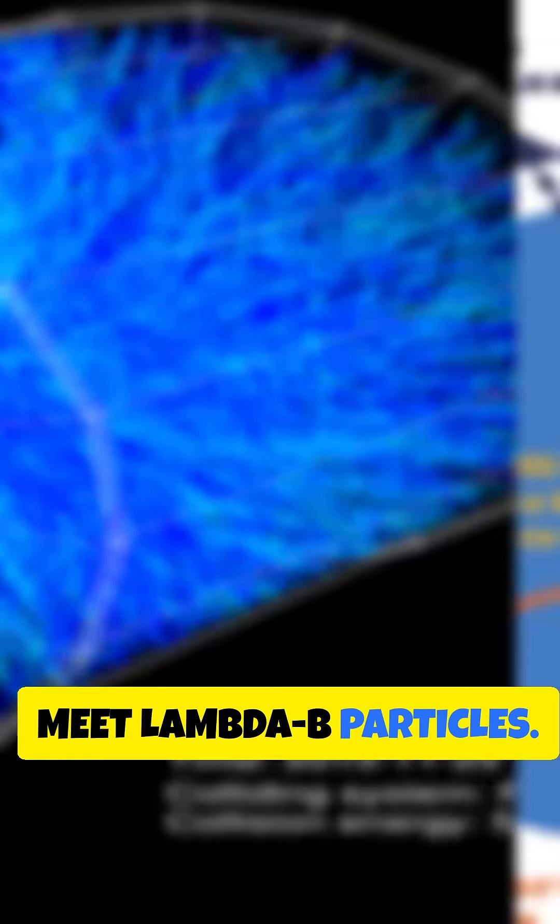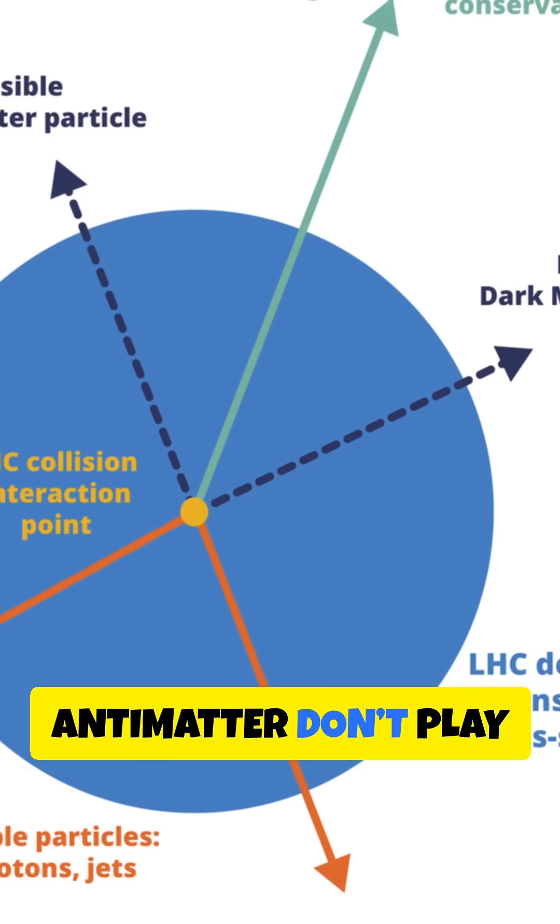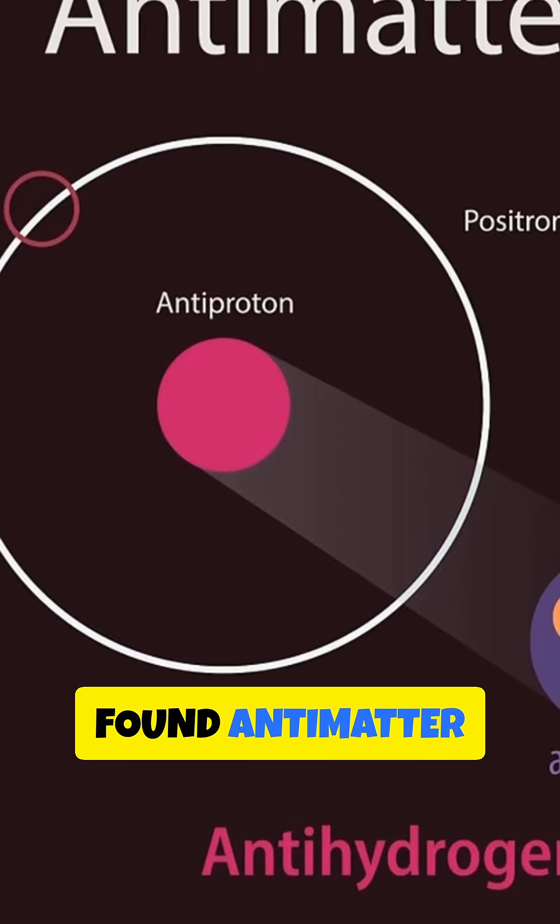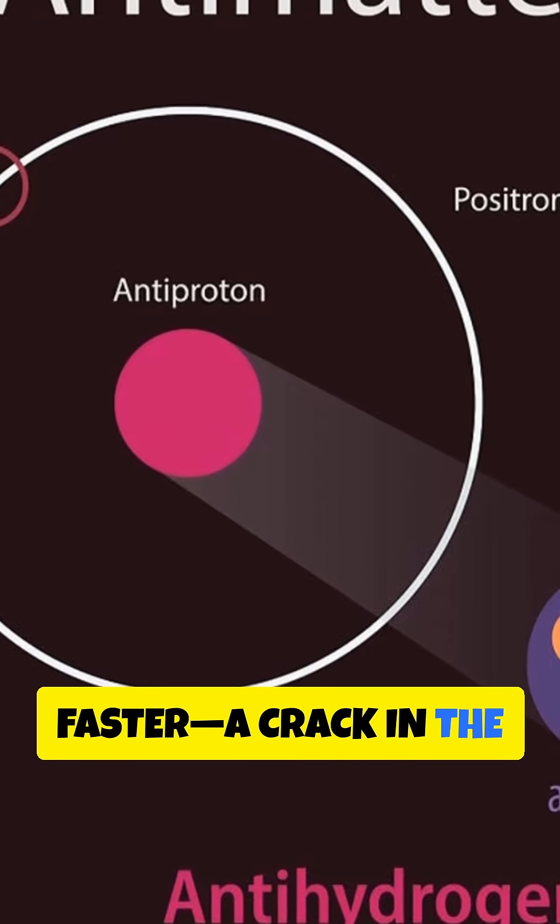Meet Lambda B particles. When they decay, matter and antimatter don't play by the same rules. The LHCB team analyzed 80,000 decays and found antimatter decays slightly faster, a crack in the universe's symmetry.